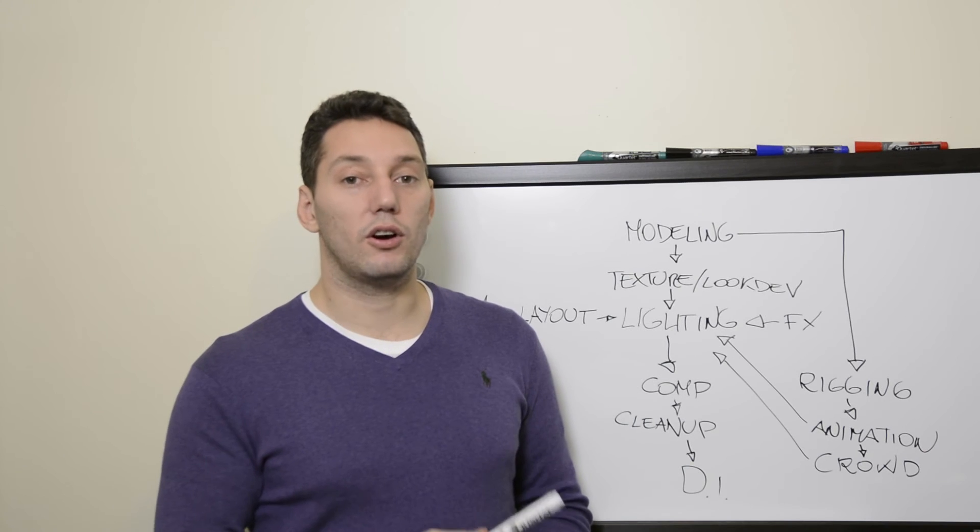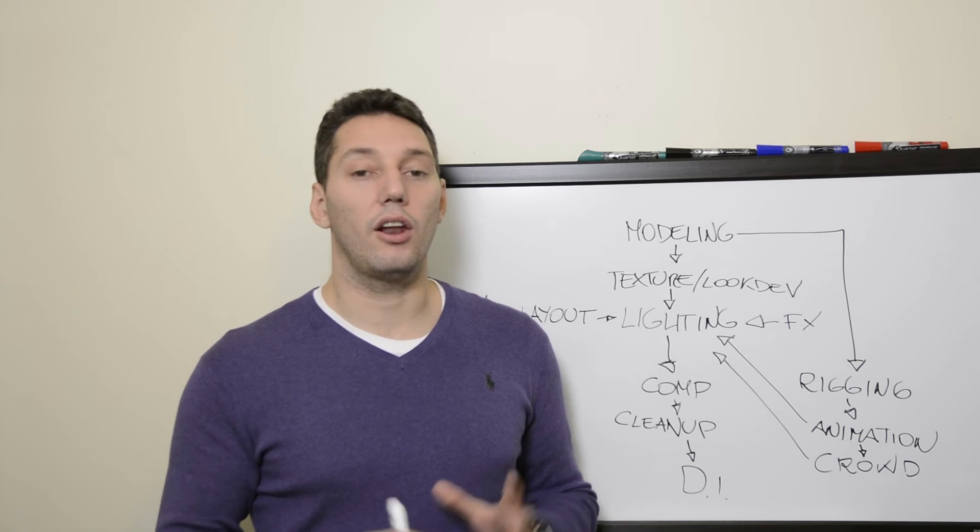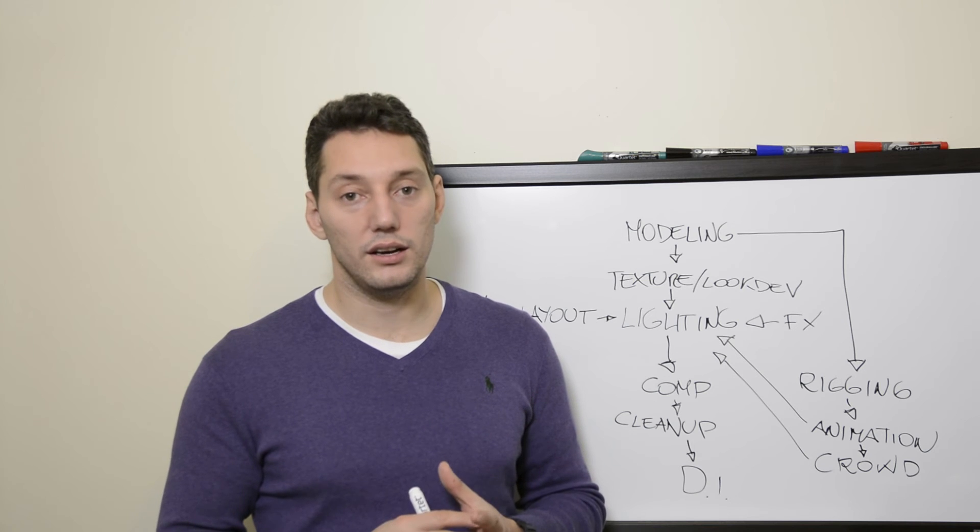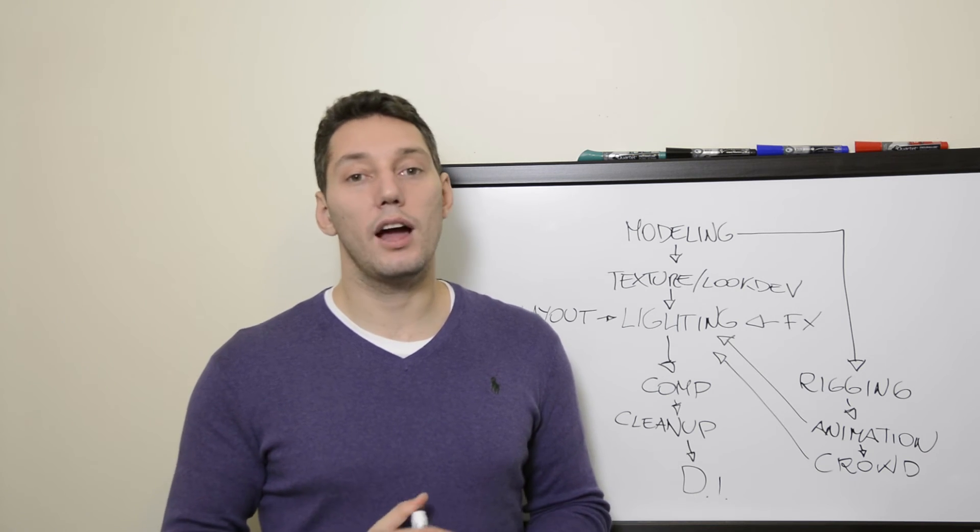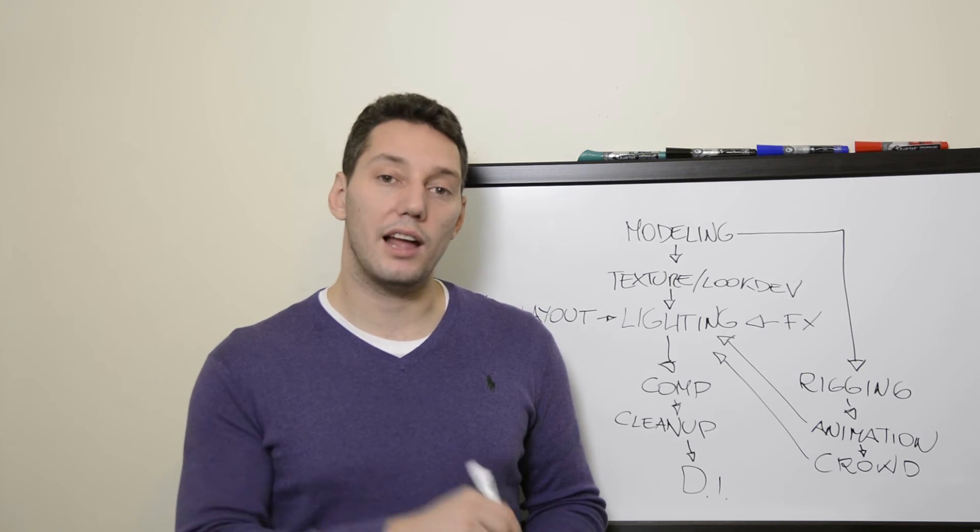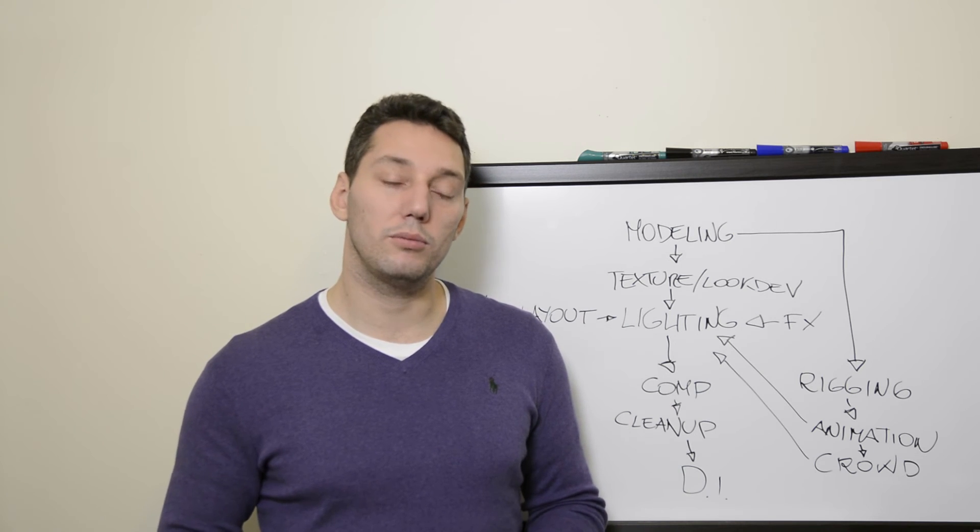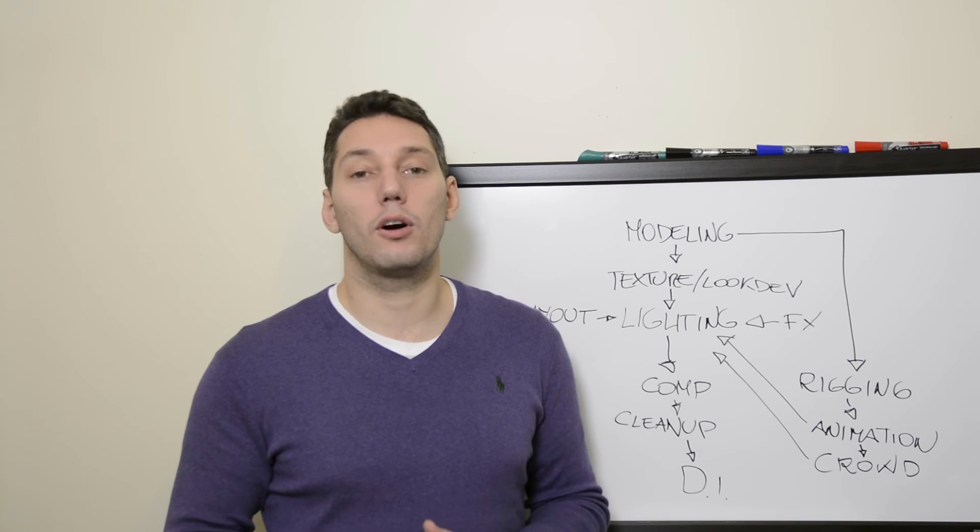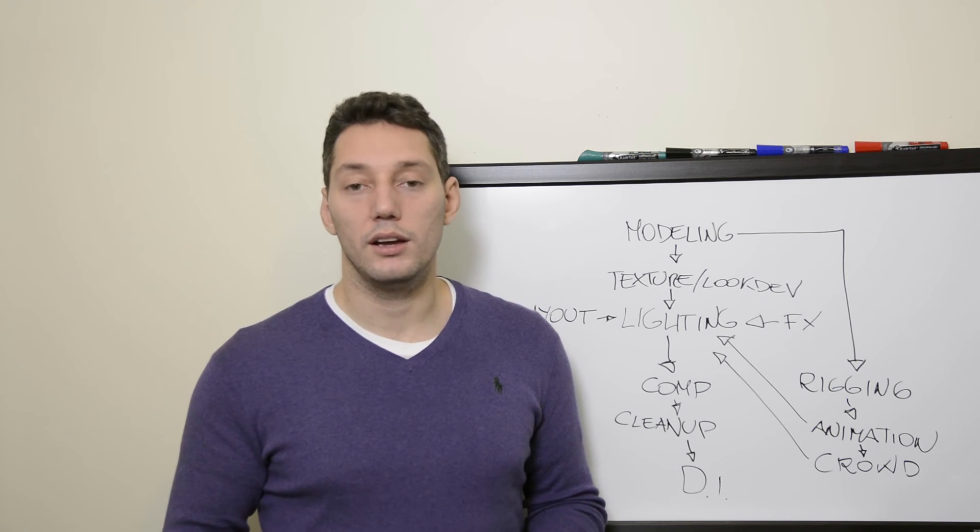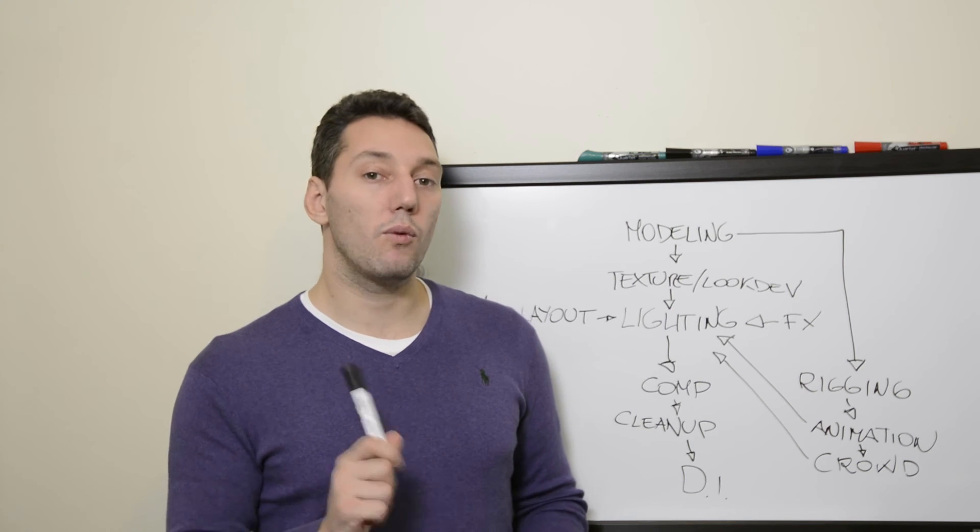So as you can see, the pipeline is quite complicated and there is a lot of things that needs to work together and there is a lot of communication that needs to happen. And a lot of times there is problems because there is a lack of communication between the departments because everybody is busy and it's always complicated to have that many people working together.